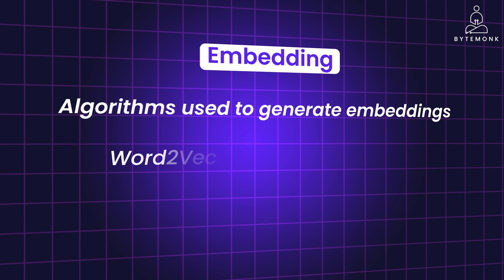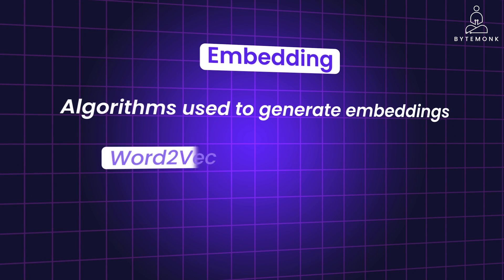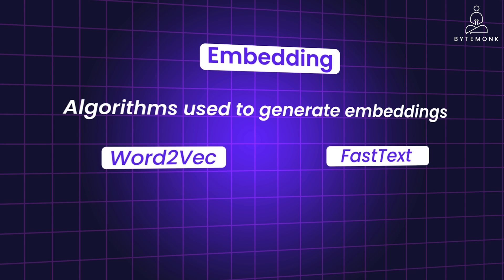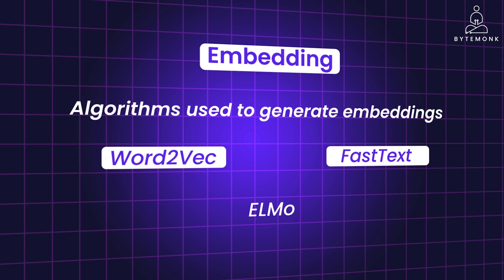For example, Word2Vec is a popular model that generates word embeddings by considering the context in which words appear. FastText, developed by Facebook, extends Word2Vec to consider subword information, making it practical for handling rare words. ELMo, or Embeddings from Language Models, generates embeddings based on the entire context of a sentence or phrase.